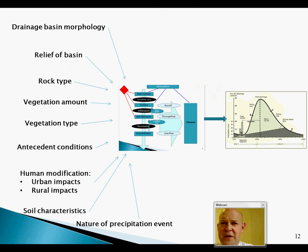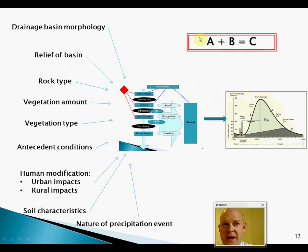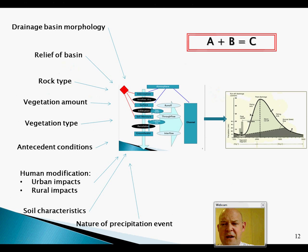So: A plus B equals C. A — the characteristics of the drainage basin; B — the drainage basin responses; C — the outcome. Questions may ask about C, requiring you to think about B and A, or ask about B to predict C. Whatever happens in C is the result of A plus B. Remember that sequence.